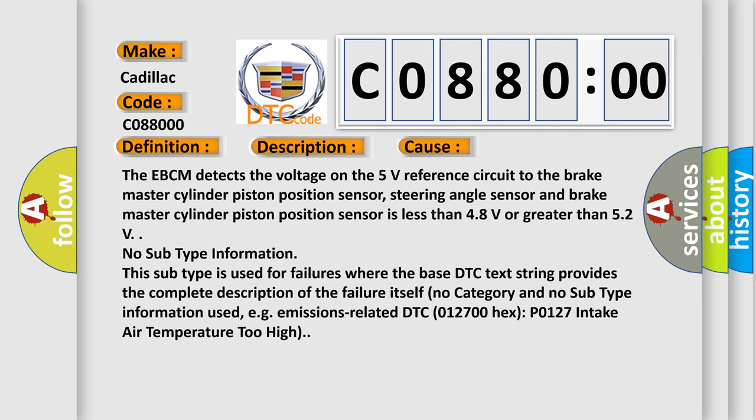No subtype information. This subtype is used for failures where the base DTC text string provides the complete description of the failure itself. No category and no subtype information used.